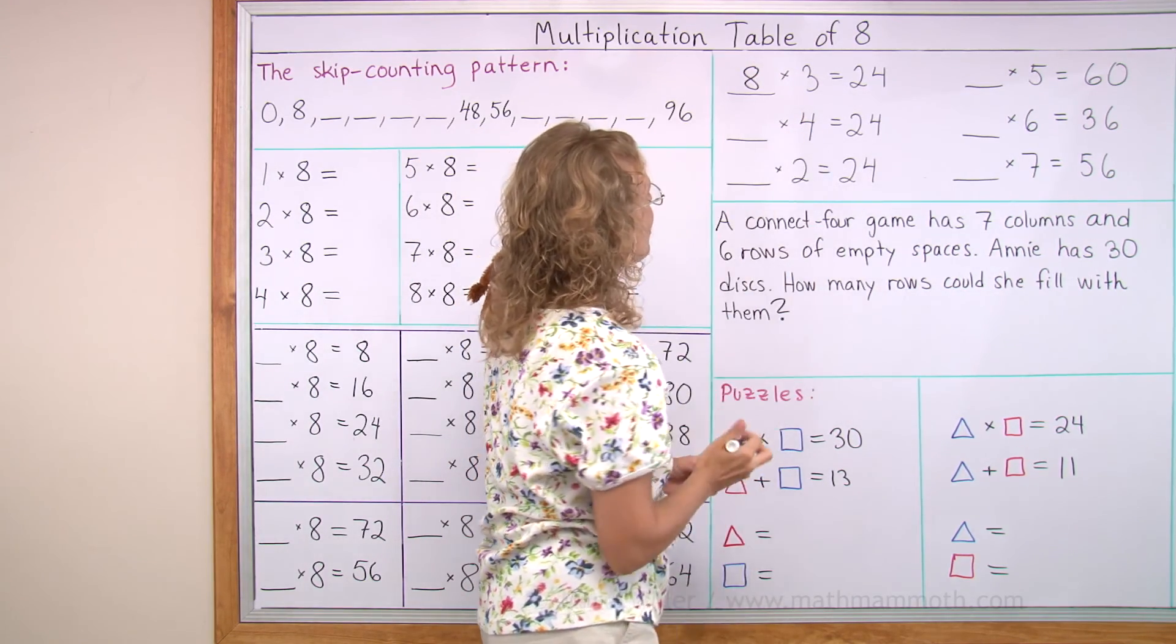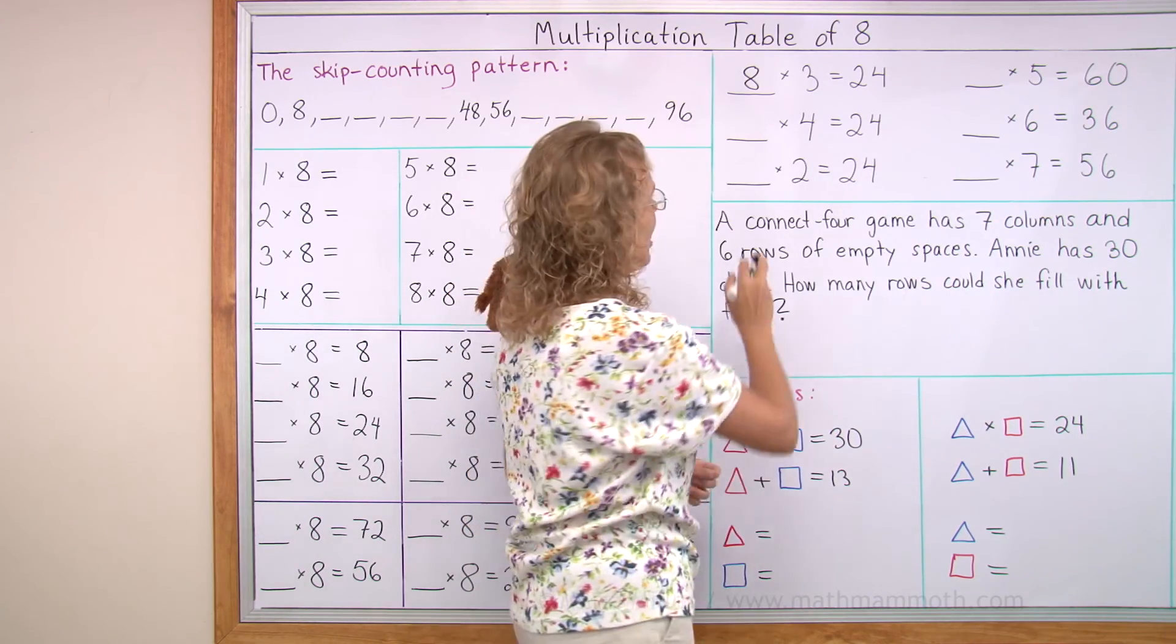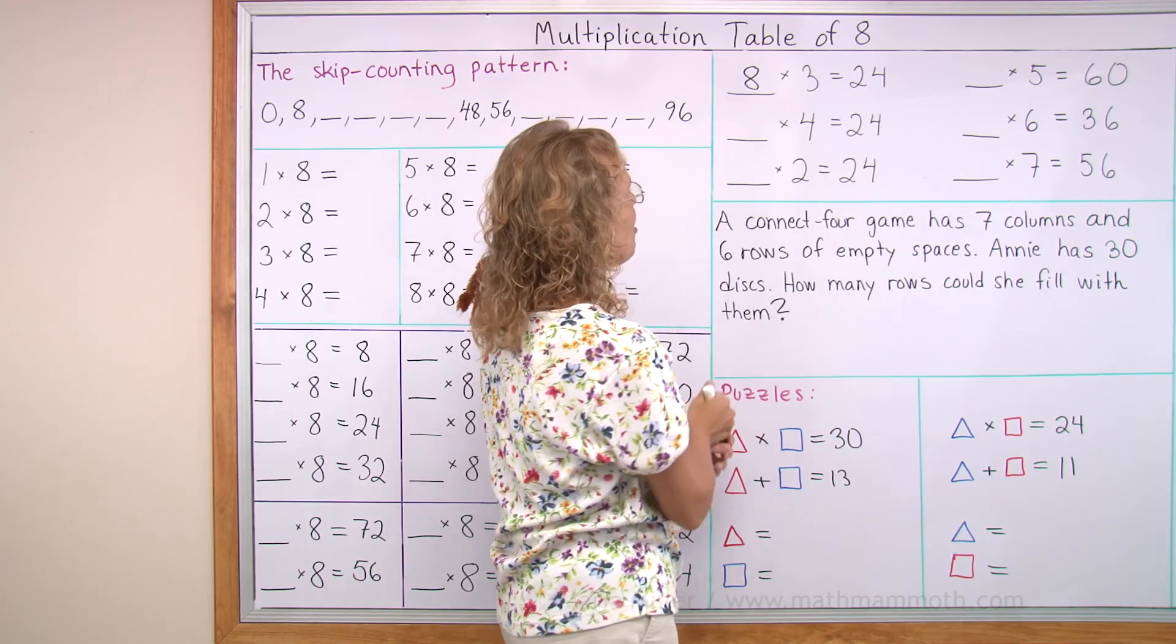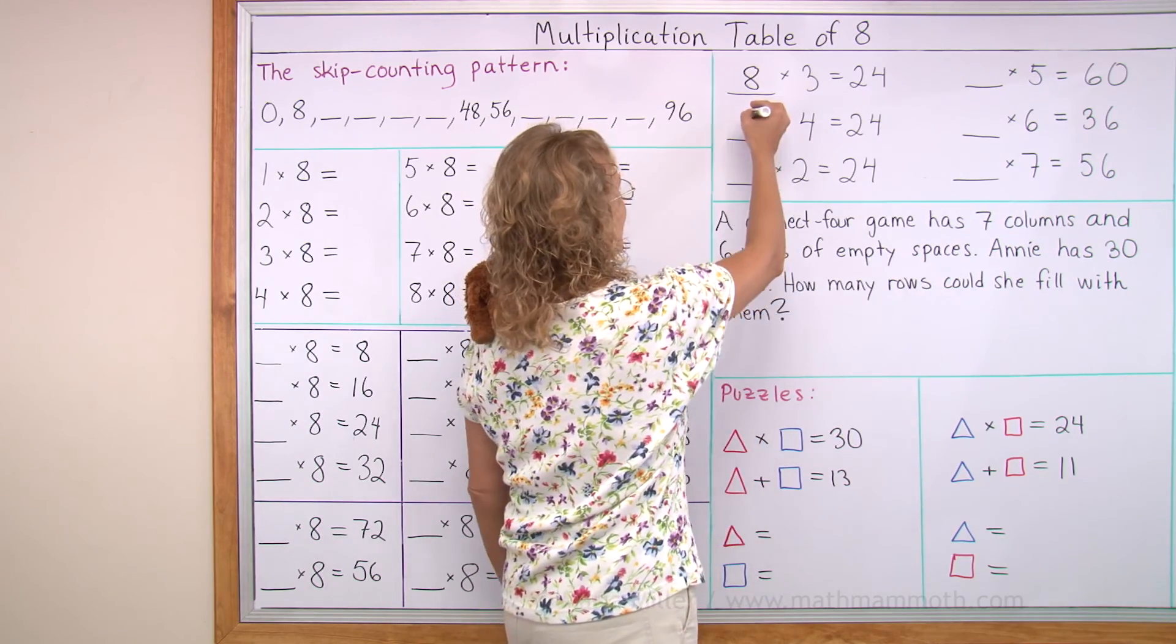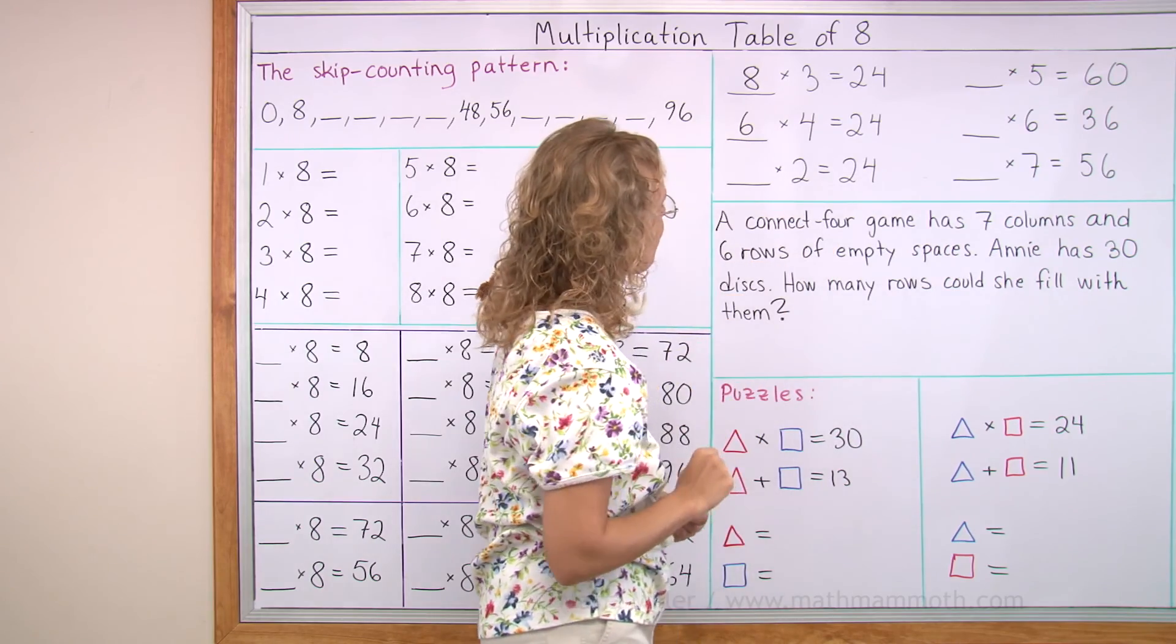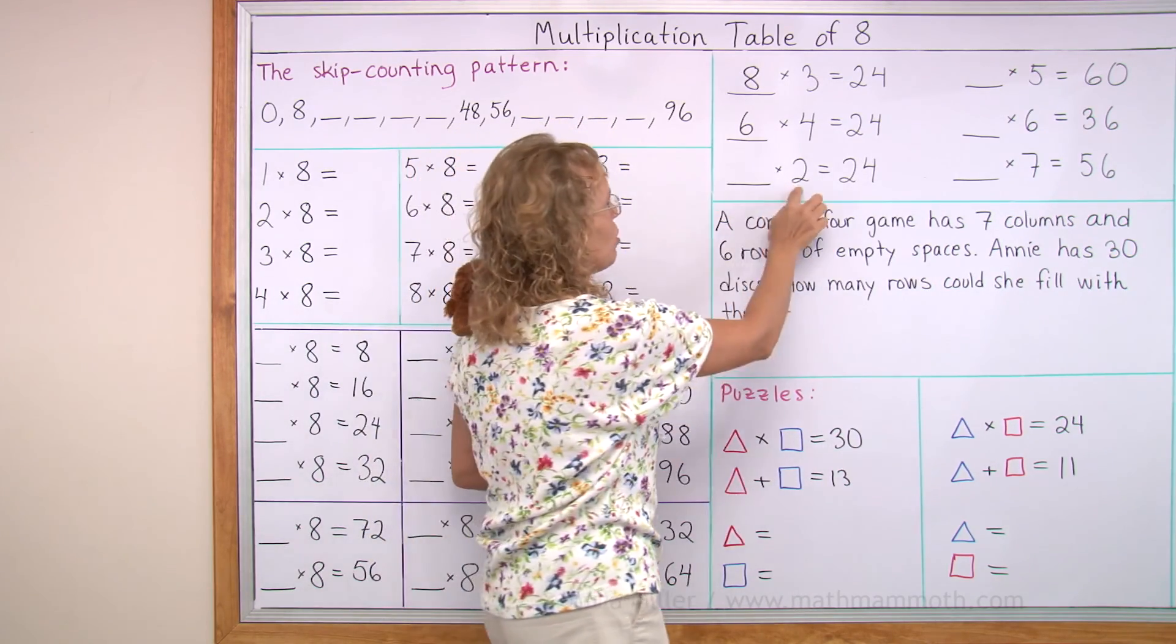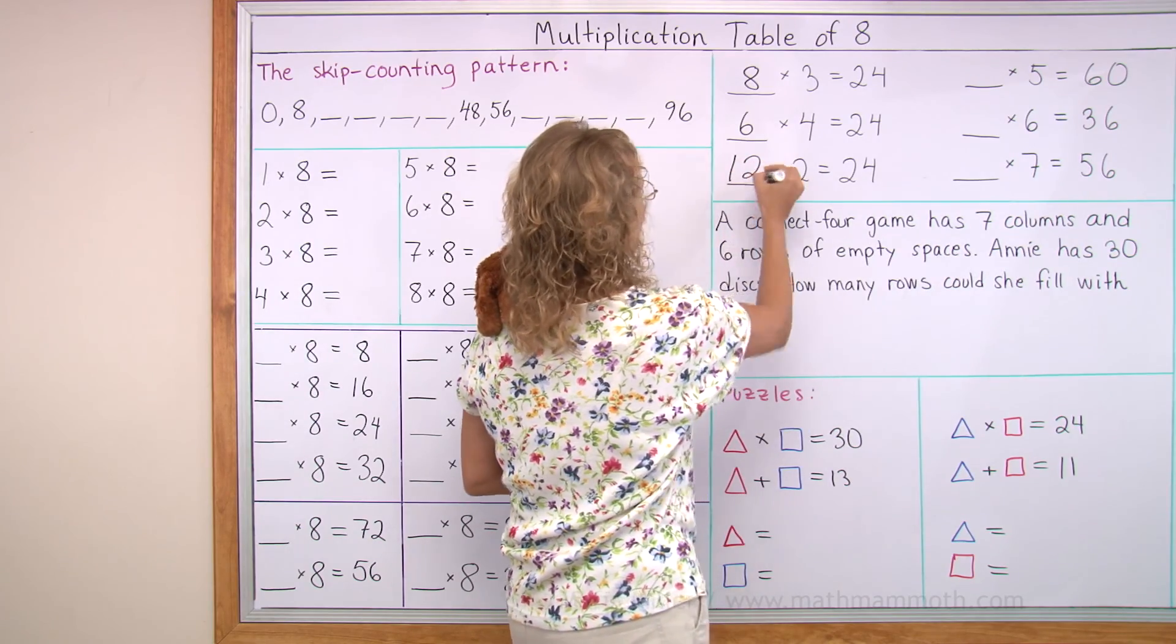How many times 4 makes 24? You remember your 4s? It's not 5. No, 5 times 4 is 20. It is 6. How many times 2 makes 24? This has to do with doubling. 2 times what number? 12.